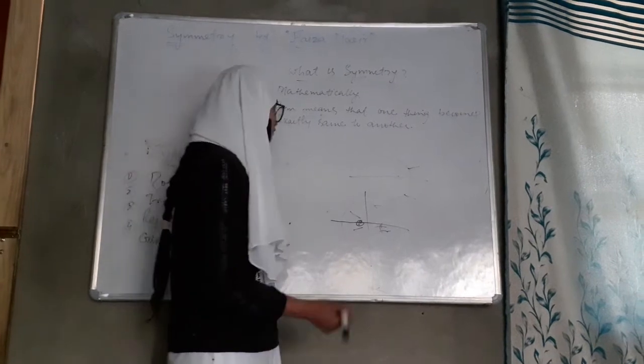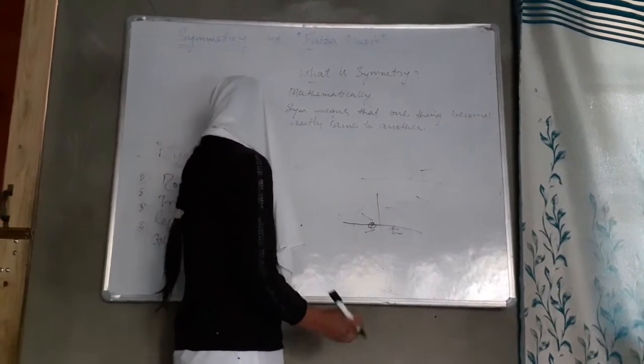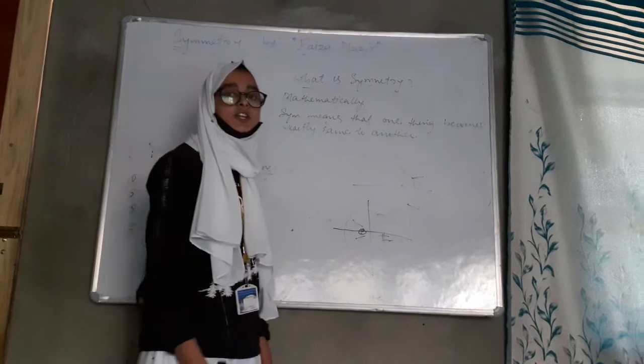And there are four types of symmetries: rotational symmetry, translation symmetry, reflection symmetry, and blind symmetry.